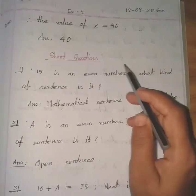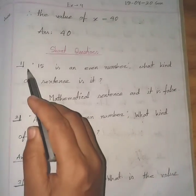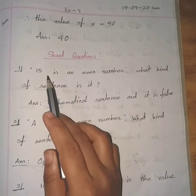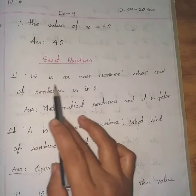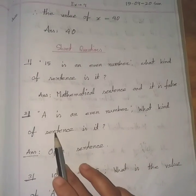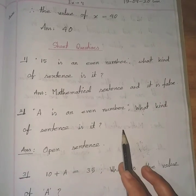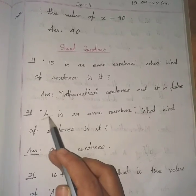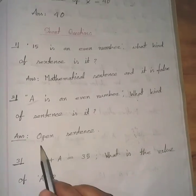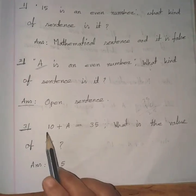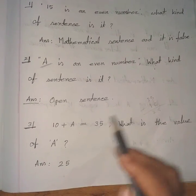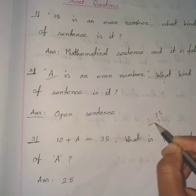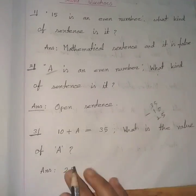Now I am explaining the short questions — listen carefully. Number 1: '15 is an even number' — what kind of sentence is it? We know 15 is an odd number, so this is a mathematical sentence and it is false. Number 2: 'a is an even number' — since a is a letter symbol, it is an open sentence. Number 3: 10 + a = 35 — to find a, subtract 10 from 35: 35 − 10 = 25. Hence the answer is 25.